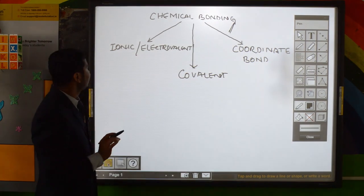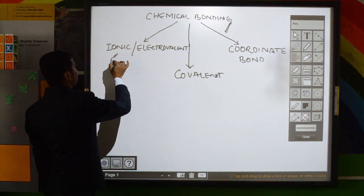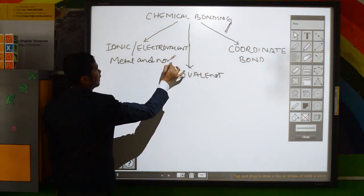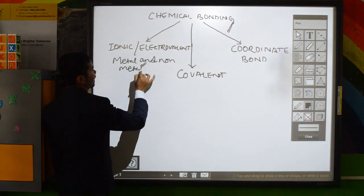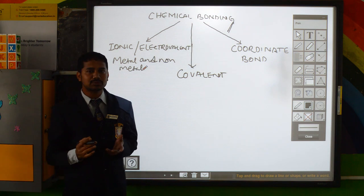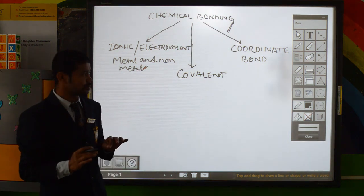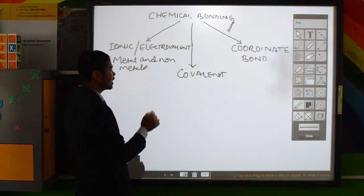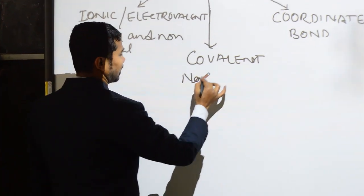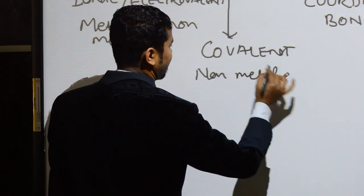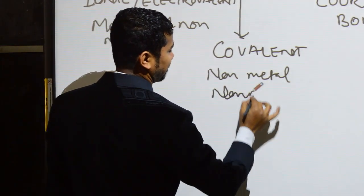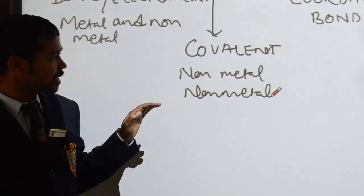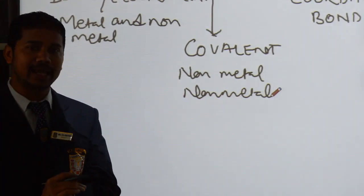The ionic or electrovalent bond, which we have already done in class, is formed between metal and nonmetal by the transfer of electrons, because metal has the tendency to lose electrons and nonmetal has the tendency to gain electrons. The covalent bond is also done in class — it is formed between nonmetal and nonmetal.